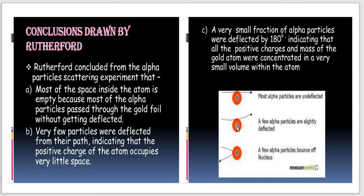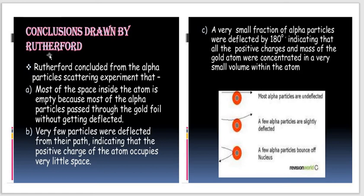A few particles were slightly deflected, indicating that the positive charge of the atom occupies very little space. A few particles were deflected back at 180 degrees, indicating that all of the positive charge and mass of the gold atom were concentrated in a very small volume within the atom. Therefore, the J.J. Thomson Atom Model failed to explain the experimental results of the gold foil scattering experiment, and Rutherford put forward a new atom model.